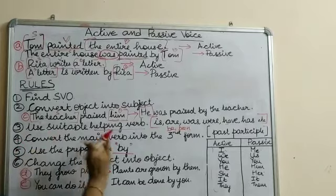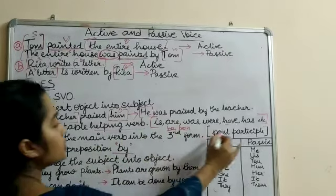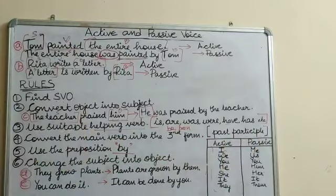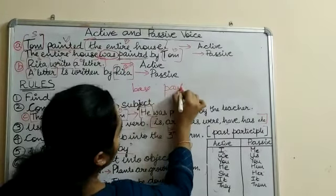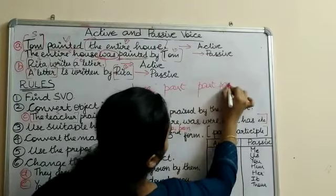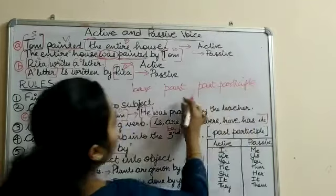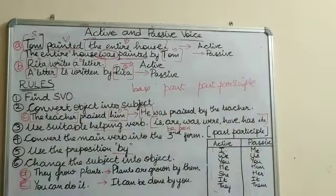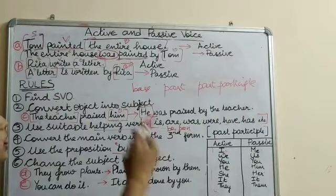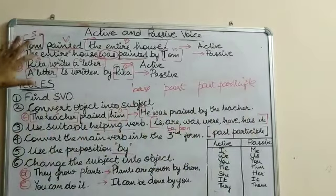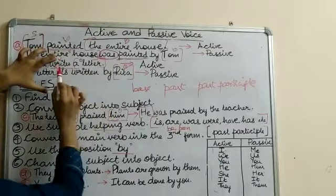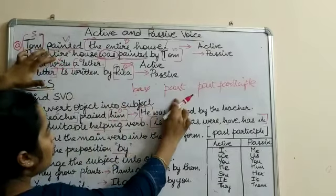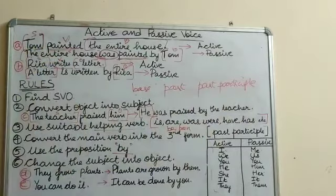The fourth step is to convert the main verb into the third form — the past participle form. A verb has three forms: the base form, the past form, and the past participle form. When we convert a sentence from active to passive, the main verb must be changed to the past participle form. For example, in 'Rita writes a letter,' writes is the base form.